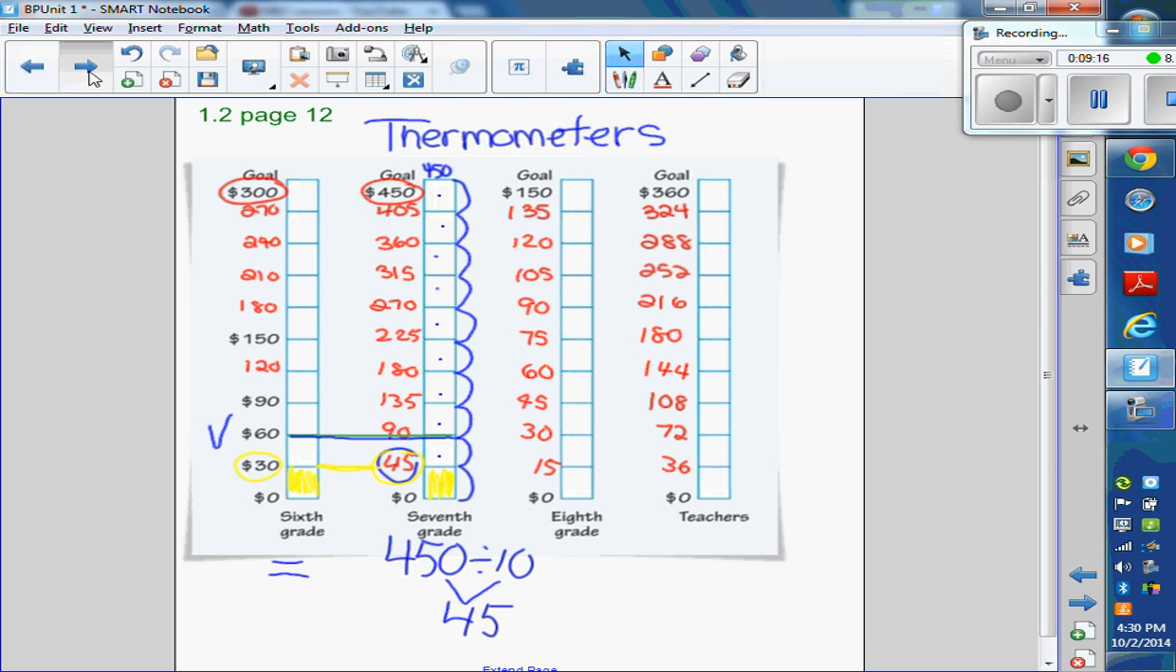If you want to check what the ratio of the sixth grade goal was, remember the sixth grade was $300 and the seventh grade is $450.